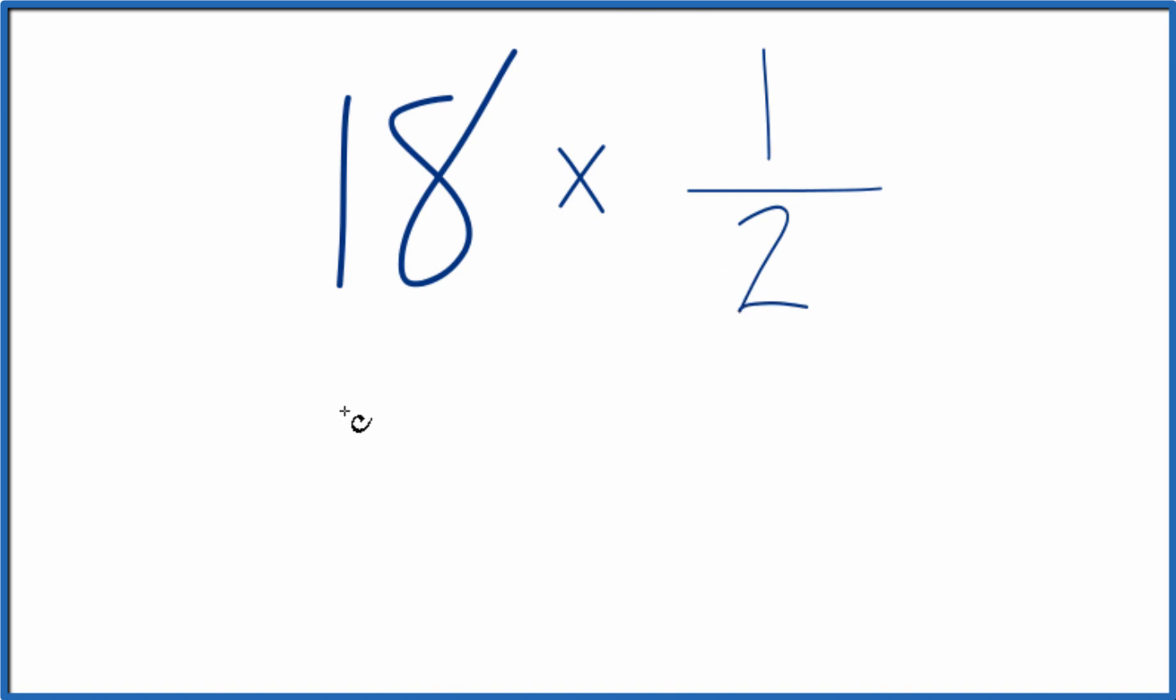Another way would be to take 18 and call it 18 over 1. 18 divided by 1, it's still 18, but now we have a fraction. And we can multiply that fraction times 1 half.